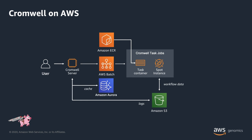Finally, here is a slightly more complicated architecture for running Cromwell on AWS. The main difference is a small EC2 instance running the Cromwell executable in server mode. Otherwise everything is roughly the same — jobs are sent to AWS Batch for processing, cache data is sent to Amazon Aurora Serverless, and workflow data and logging information is sent to Amazon S3.